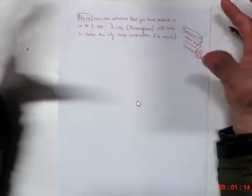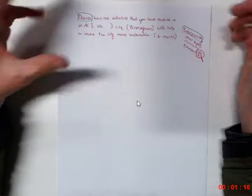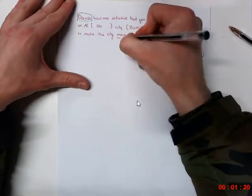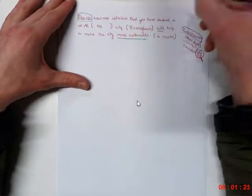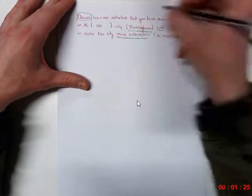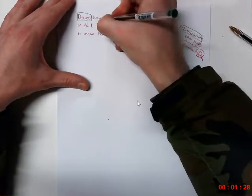So we're going to box the command word discuss. We're going to not be evaluating exactly, but we're going to be discussing and explaining how the city will become more sustainable. So we're going to underline those words. And of course, the city specifically in the country that we need to look at is Birmingham. And the fact that we are only supposed to be looking at one initiative.